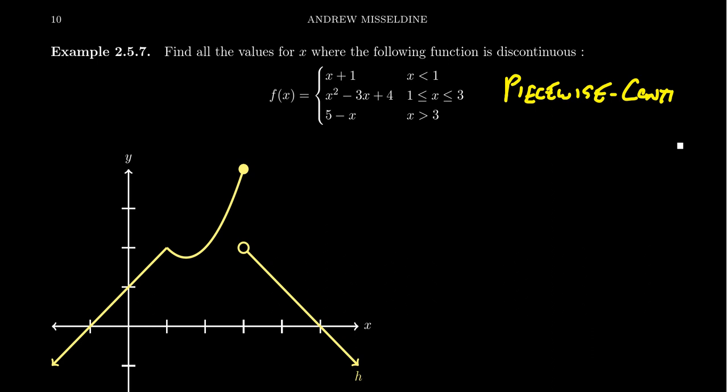A piecewise continuous function is a function pieced together using continuous functions. The advantage is that when you're inside a piece, you're going to be continuous. For example, if you look at the piece y equals x plus 1, you see this line right here — everywhere in the middle of the piece, you're going to be continuous at those points.